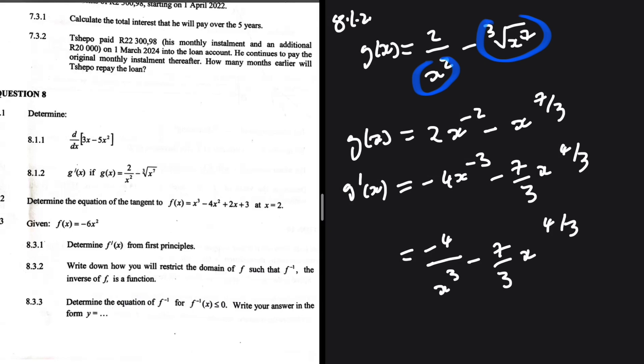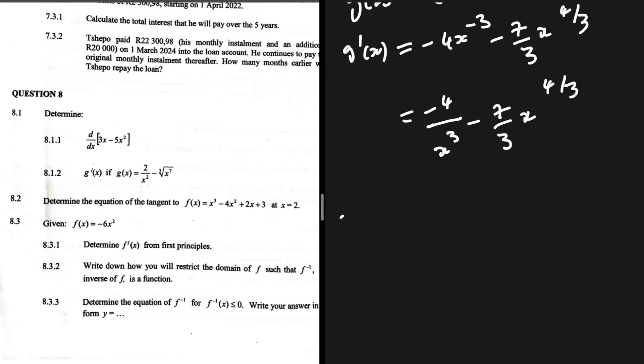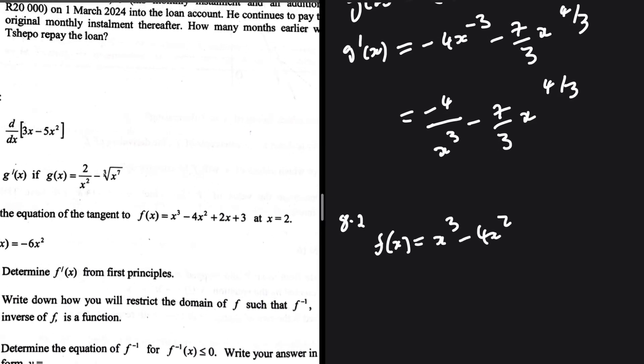So I think we can leave it like that. I don't think we can be required to further simplify it. I think that is perfectly fine. And then 8.2, determine the equation of the tangent to f of x at x is equal to 2.